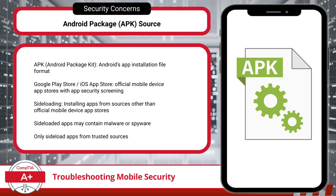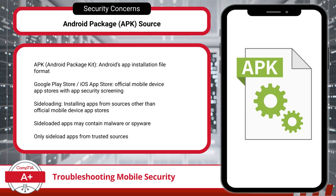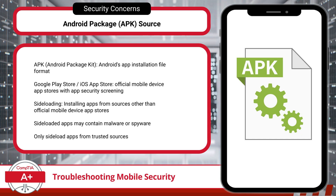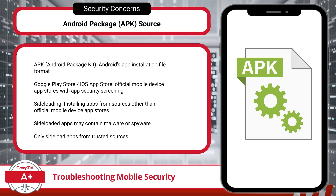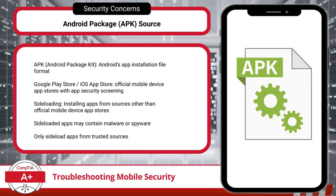APK is the file format that Android uses to distribute and install applications. Think of it like an installer file that includes all the components needed for an app to run. When you download an app from the Google Play Store, the APK file is automatically installed in the background, with security checks already in place. But with sideloading, you're manually downloading the APK from a third-party site and bypassing the Play Store entirely. Sideloading is often used to access apps that aren't available on the Play Store, sometimes because they're region-restricted, still in beta, or offer features not allowed under Google's policies. While sideloading opens up additional app options, it comes with significant security risks. Unlike apps on the Play Store, these third-party APKs haven't been through Google's security screening process, which means they can easily contain hidden malware or malicious code designed to compromise the device, steal data, or install unwanted software.